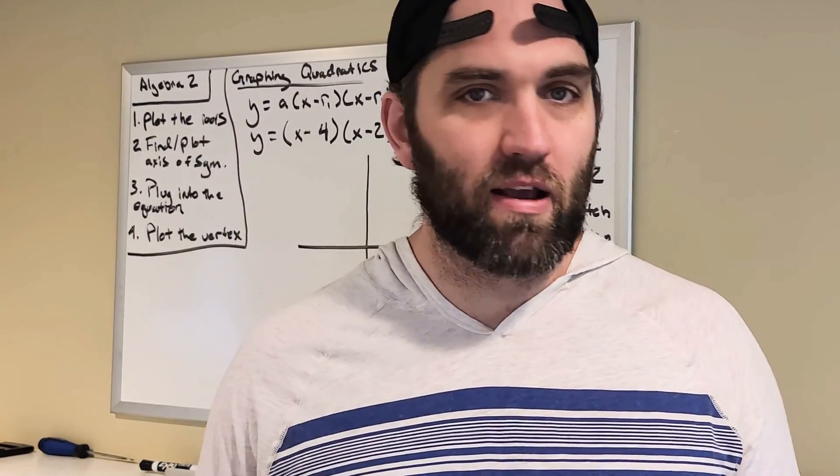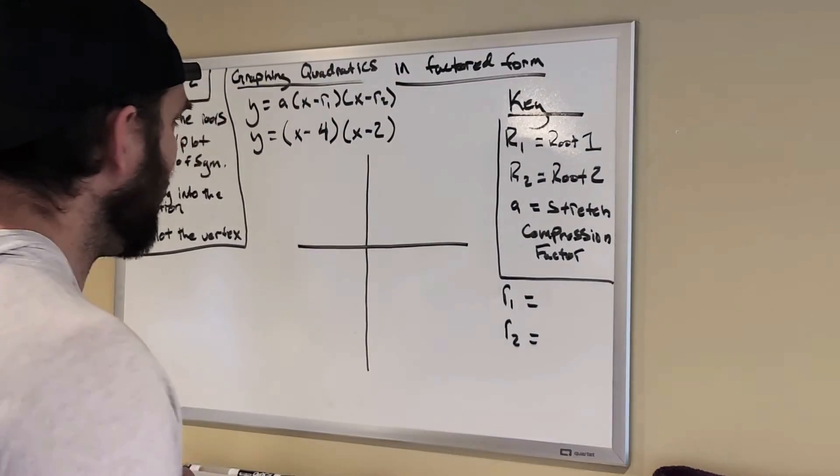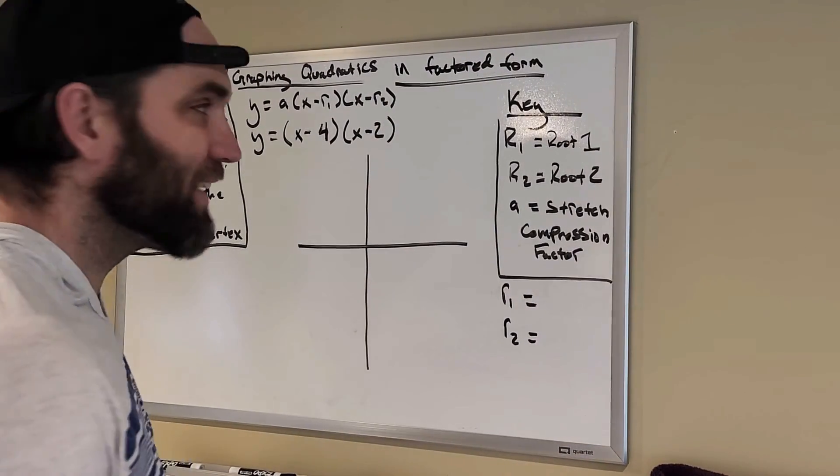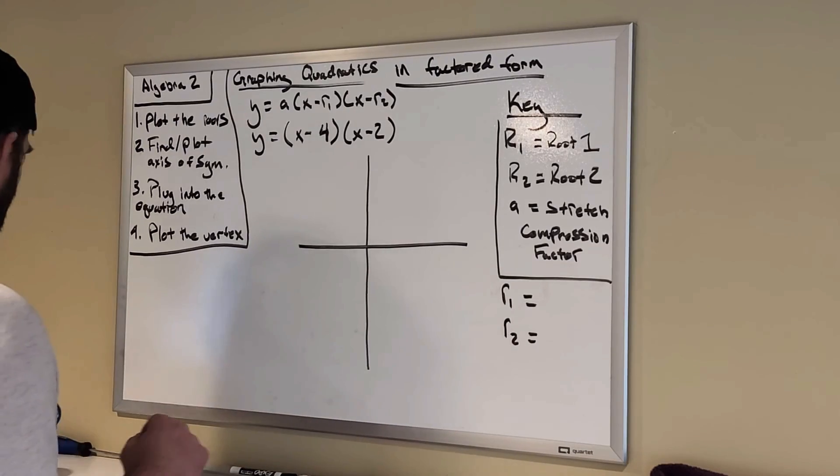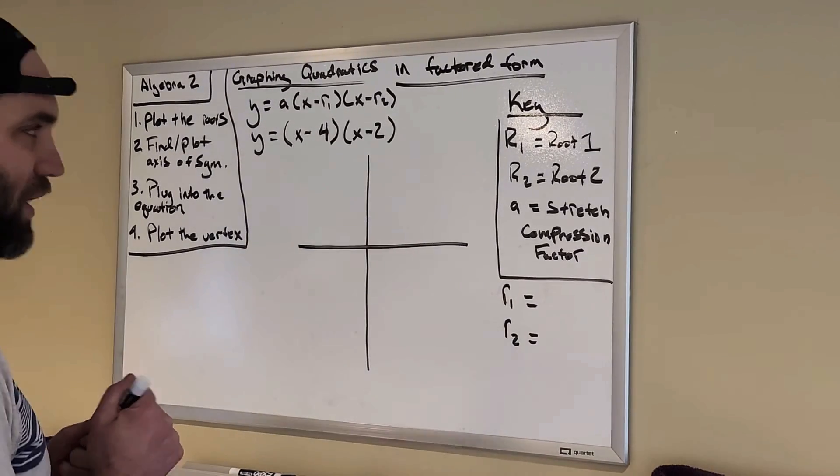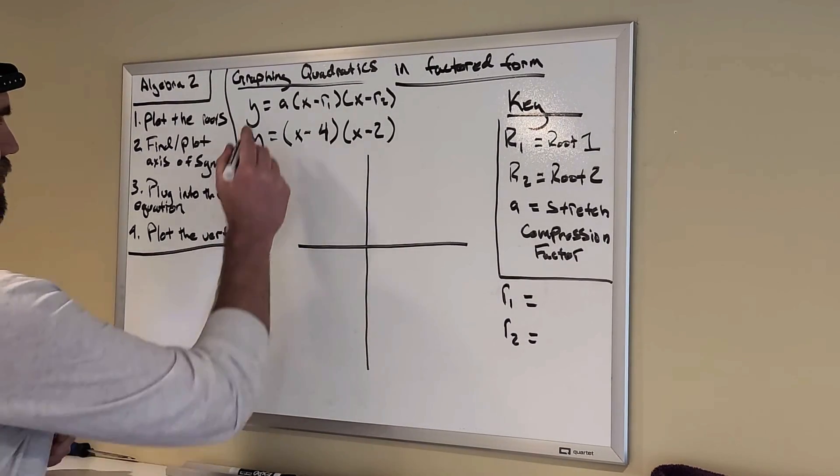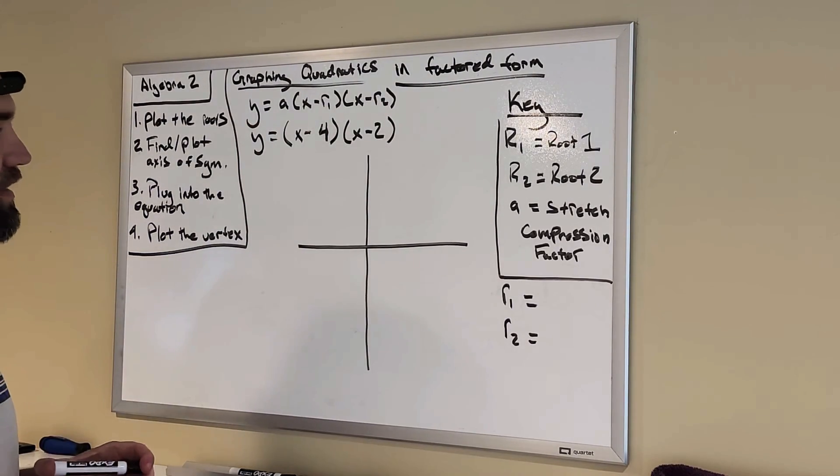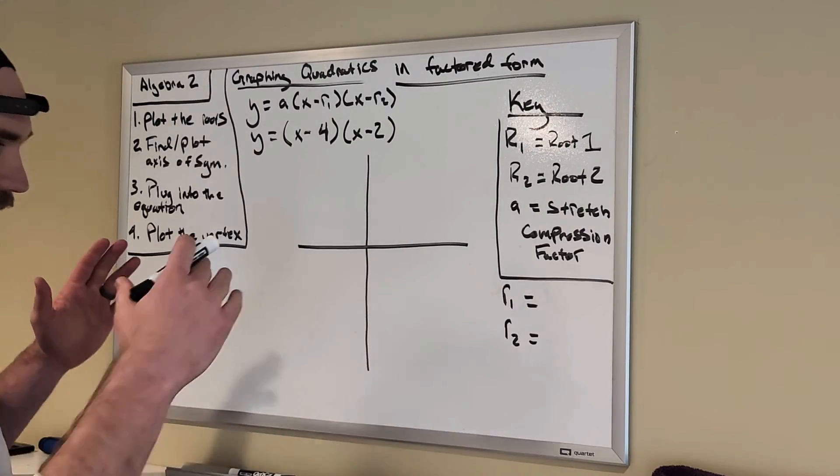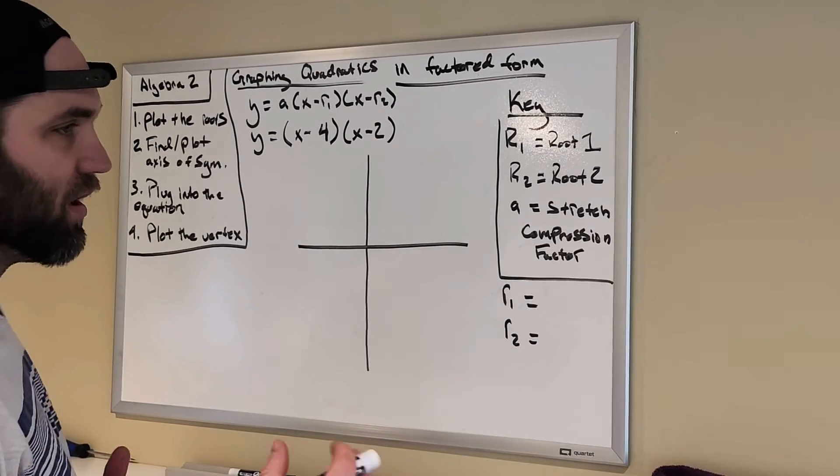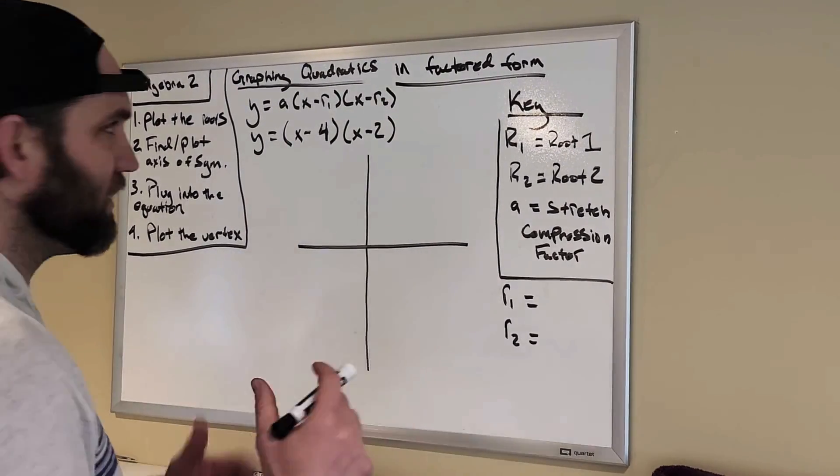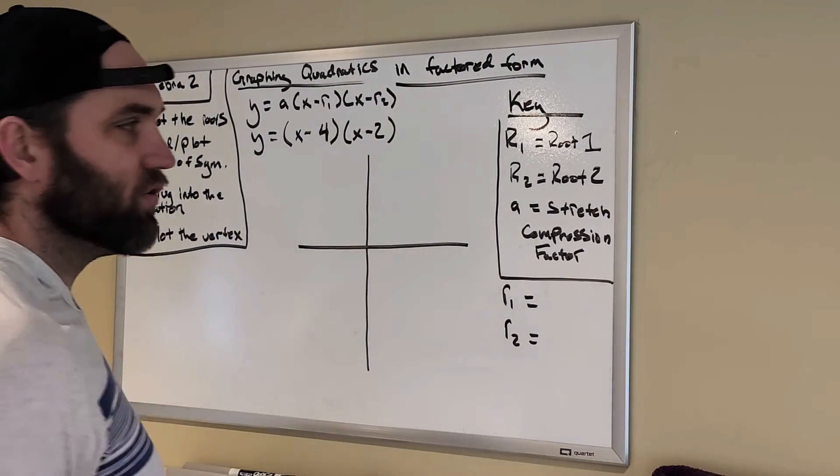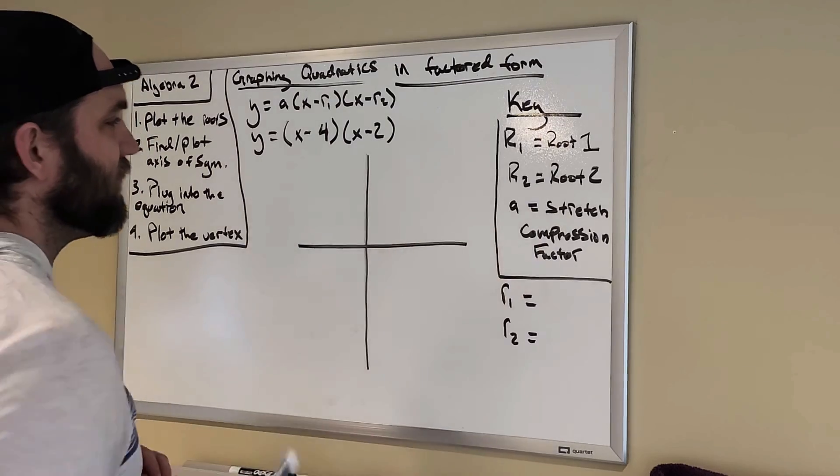And then now let's just take a look at what we're doing today. As I mentioned, we're going to be doing graphing quadratics, but we're going to be doing it in factored form today. We're going to be using factored form. So, what is factored form? Factored form is right here, okay, that top equation where it says y is equal to a, and then in parentheses, x minus r1, and then in parentheses again, x minus r2. So, r1 and r2, those stand for root 1 and root 2.